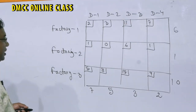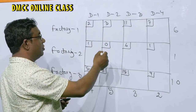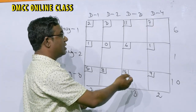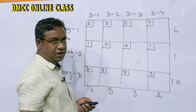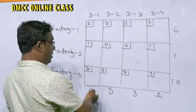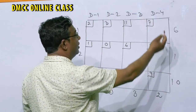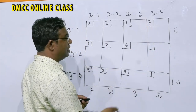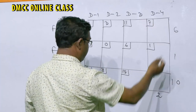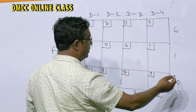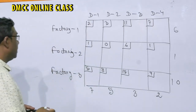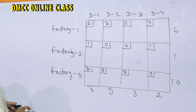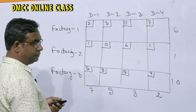If the given problem is not balanced, we have to construct a dummy row or dummy column with transportation cost zero to make it balanced. If demand is more than supply, construct a dummy source; if supply is more than demand, construct a dummy destination.